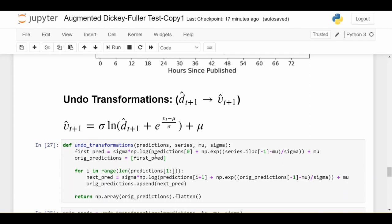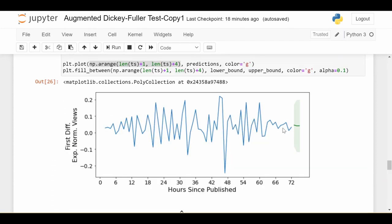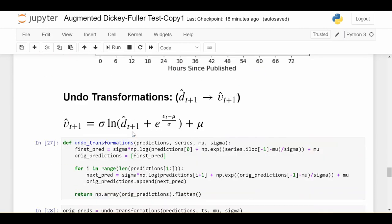If I undo all the transformations in that function with a little bit of simple algebra, what I get is that V_(t+1) hat, the predicted number of views in the next hour - and this is views, not any function of views - is equal to sigma times natural log of D_(t+1) hat, the predicted transformed number of views, plus e to the power of (V_t - mu)/sigma plus mu.